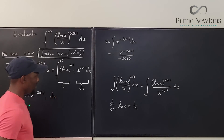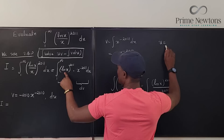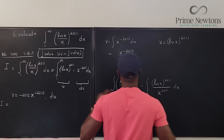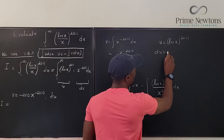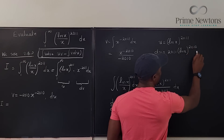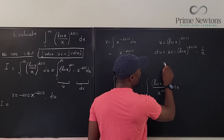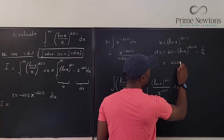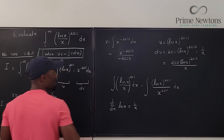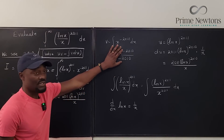Now we need to find du. We have u = (ln x)^2011, so the derivative du will be 2011 times (ln x)^2010 times the derivative of the inside, which is 1/x. Simplified, that gives du = 2011·(ln x)^2010 / x dx. Now we can use the integration by parts formula. I notice I didn't write v correctly before — it should be 1 over, so it goes in the denominator.